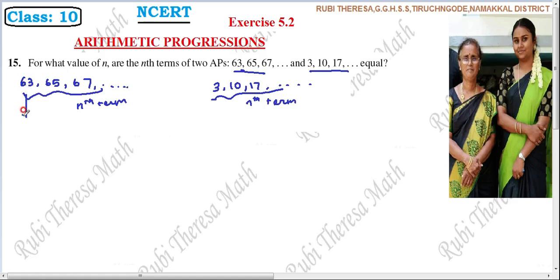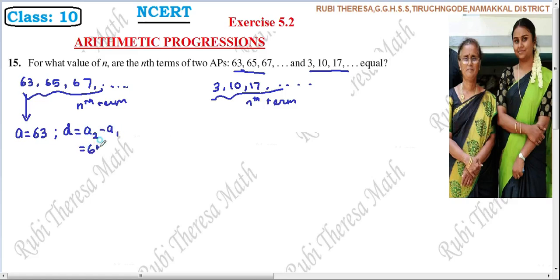Here are the initial terms. For the first sequence, what is the initial term? A equals 63. And what is the common difference D? D equals A2 minus A1, which is the second term minus the first term. That is 65 minus 63. D equals 2.